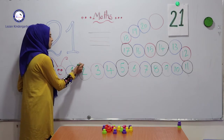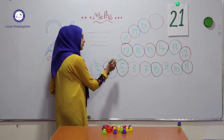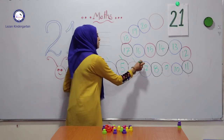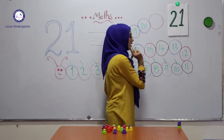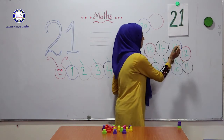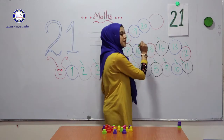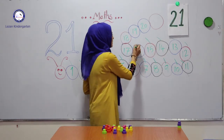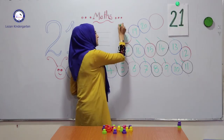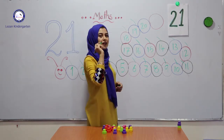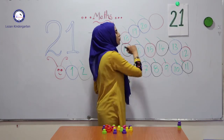1, 2, 3, 4, 5, 6, 7, 8, 9, 10. After 10: 11, 12, 13, 14, 15, 16, 17, 18, 19. After 19: 20.